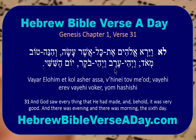V'yihi Erev, V'yihi Boker — 'and there was evening, and there was morning.' Erev is evening. Erev tov is 'good evening.' So we've got tov and Erev here. V'yihi Boker — 'and there was morning.' Boker is morning in modern Hebrew.